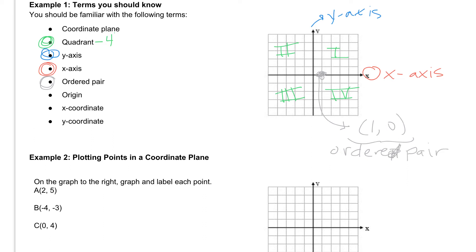Then if we take a look at the origin, the origin is that point right there in the middle where the y-axis and the x-axis come together. The origin is always the point 0 comma 0.